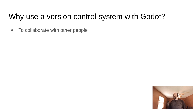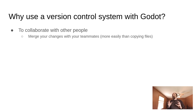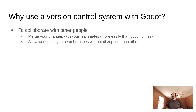One of the main reasons to use version control is to collaborate with other people. There have definitely been games made by teams without version control systems, where they're just mailing files back and forth or putting them in Dropbox or something. But it's way easier to merge your changes with the changes of your teammates using a version control system than just copying files around. It's much less likely to lead to you losing work or having crazy situations to untangle. It also allows you to work in your own branches without disrupting each other, and then merge when those changes are ready.